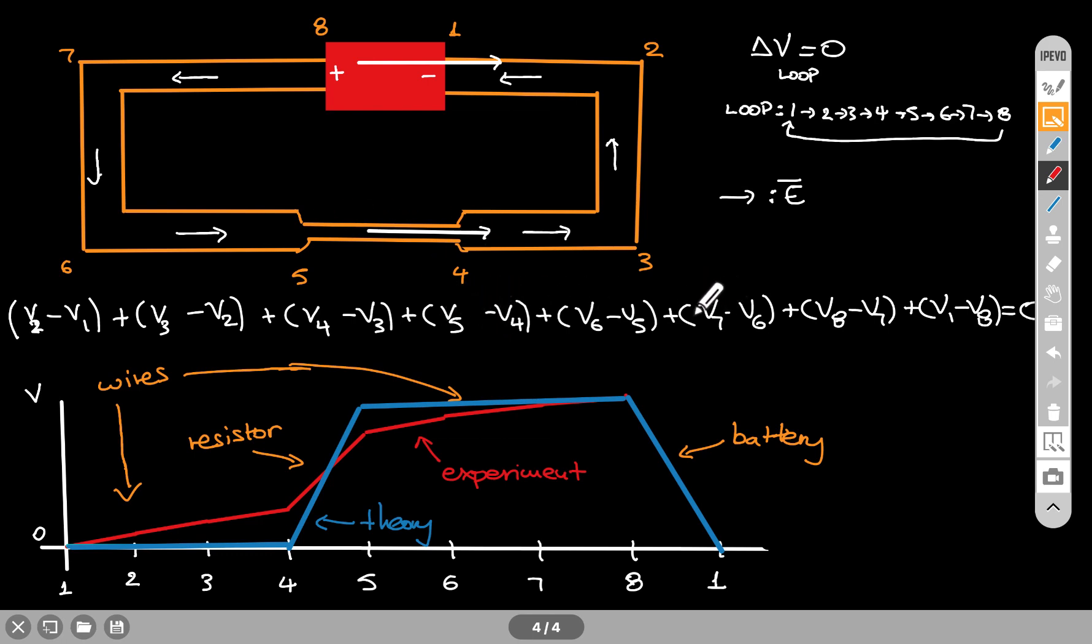I do want you to keep in mind the difference between experiment and theory. If you have the chance to work with circuits, batteries, wires, and resistors, you will see that you do have a non-zero potential change when you move in a wire. It's just fairly small, and in some cases it is okay to neglect that and make it exactly zero.